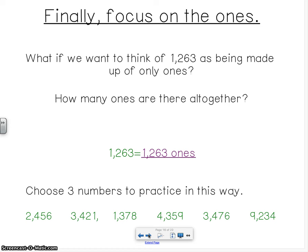Finally, focus on the ones. What if we want to think of 1,263 as being made up of only ones? How many ones are there altogether? Well, if there's no other place values that we're considering, I think that there's 1,263 ones. That's a lot. Can you imagine having to draw 1,263 circles?